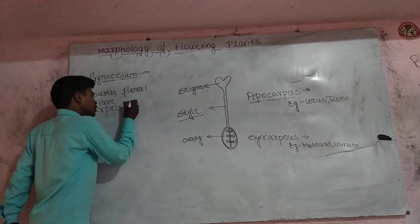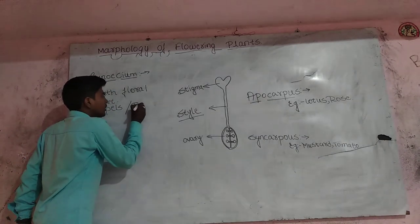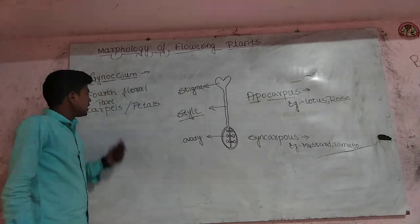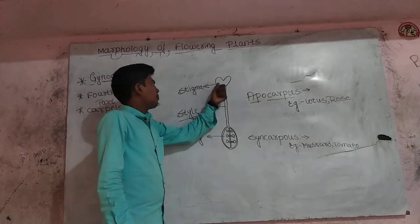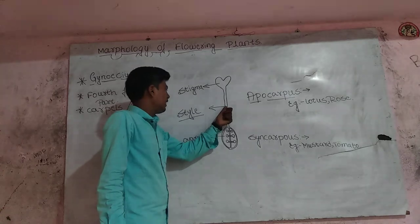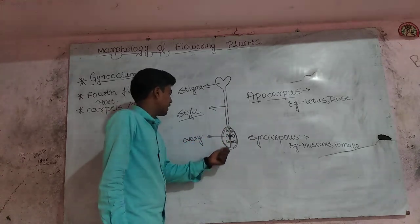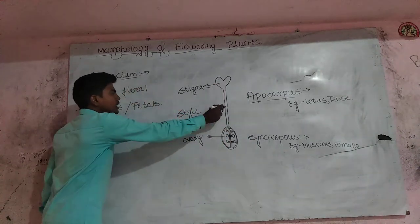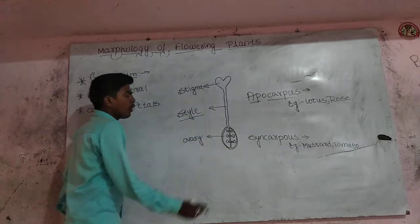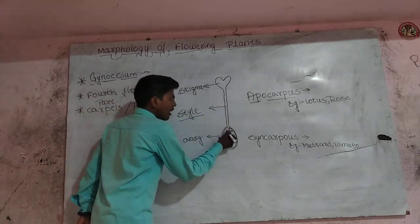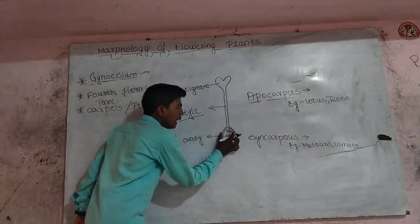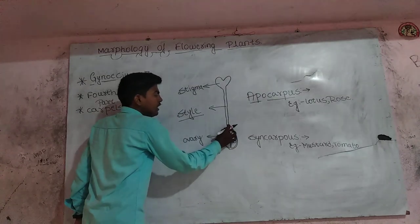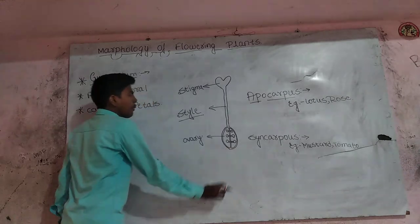Carpels are also called Petals. Each Carpel consists of Stigma, Style, and Ovary. The Ovary is the lowest and swollen part of the Carpel.